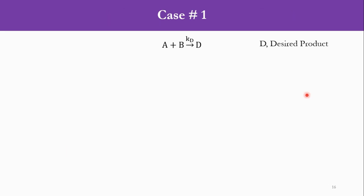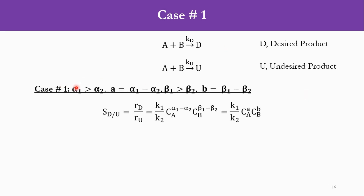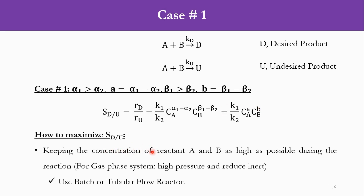Case 1: A plus B produces D, and A plus B produces U. Here α1 > α2 (difference = A) and β1 > β2 (difference = B). The instantaneous selectivity becomes K1/K2 * Ca^A * Cb^B, which shows that selectivity is directly proportional to the concentration of both A and B. So we have to keep the concentration of both reactants as high as possible. For gas phase systems, operate at high pressure and reduce inerts. We will use a batch reactor or tubular flow reactor — the same conclusion as for a single reactant case.